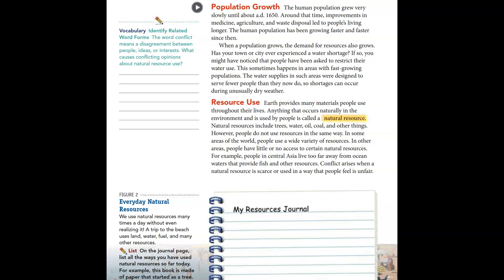For example, this book is made of paper that started as a tree. For my resource journal, I can say my science book, some of the foods I had for lunch today, the water I used for my shower this morning, and the water I'm drinking right now. My mom used gas driving today. I wrote stuff down with a pencil, which is made from wood. My clothes are made from cotton or possibly polyester.